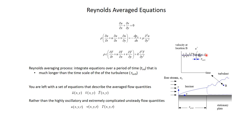ū is no longer a function of time, at least if our flow is in steady state — and by steady state I mean in terms of the external boundary conditions imposed on the flow. As long as we have a steady free-stream velocity, the flow itself in a turbulent regime will be unsteady, but the average velocity ū will be steady. We're left with equations describing ū, v̄, and T̄ as functions of x and y only.